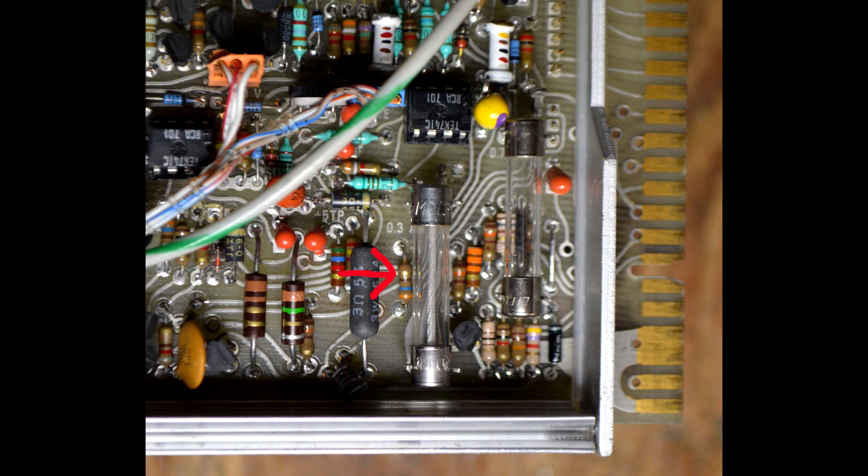The plus and minus 20 volt and plus 5 volt supplies were all correct. Fuse F800, a 3 tenths amp slow blow, was open.